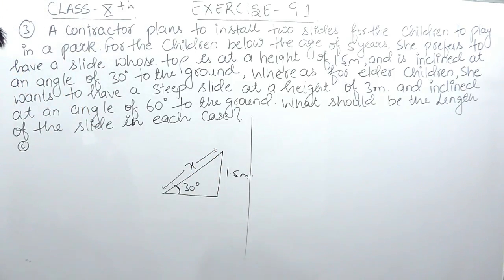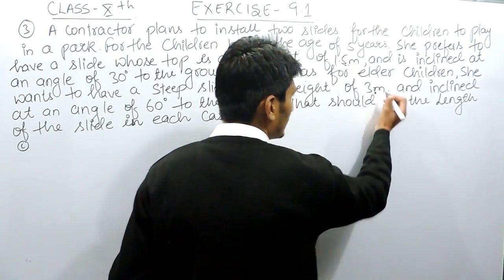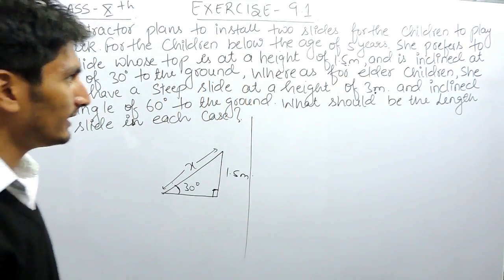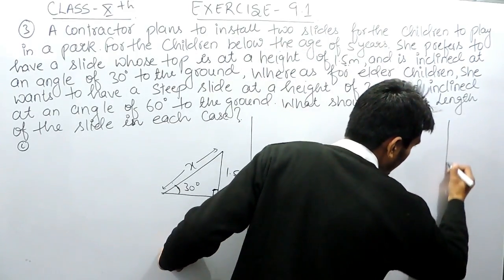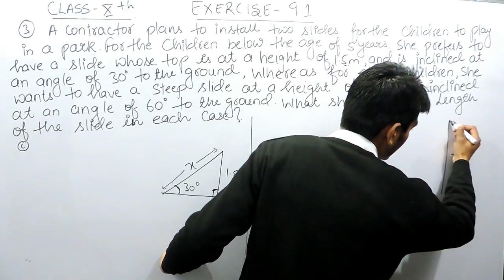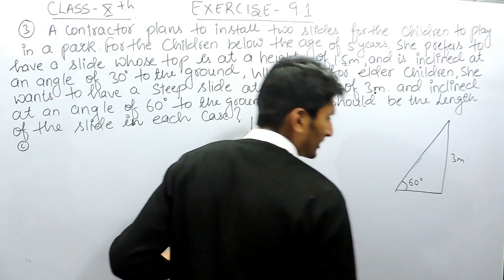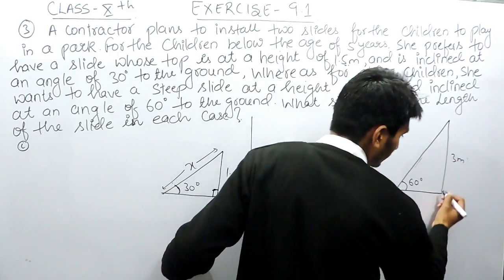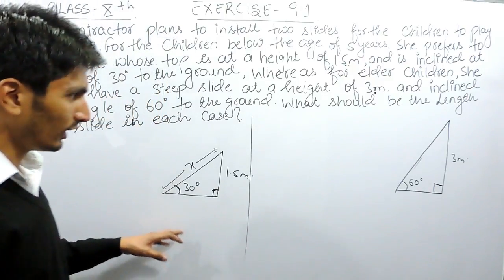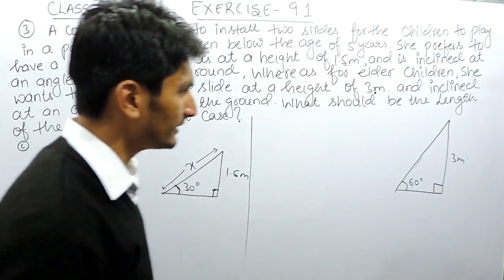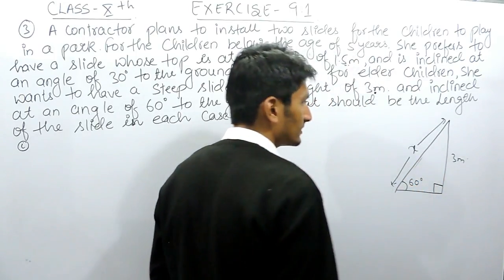The pole on which the slide is placed must be vertical. In the second case, the slide is steep and its height is 3 meters above the ground, inclined at 60 degrees. The vertical pole makes an angle of 90 degrees with the ground. So in case one the height is 1.5 meters and in case two the height is 3 meters, and in both cases we need to find the length of the slide.